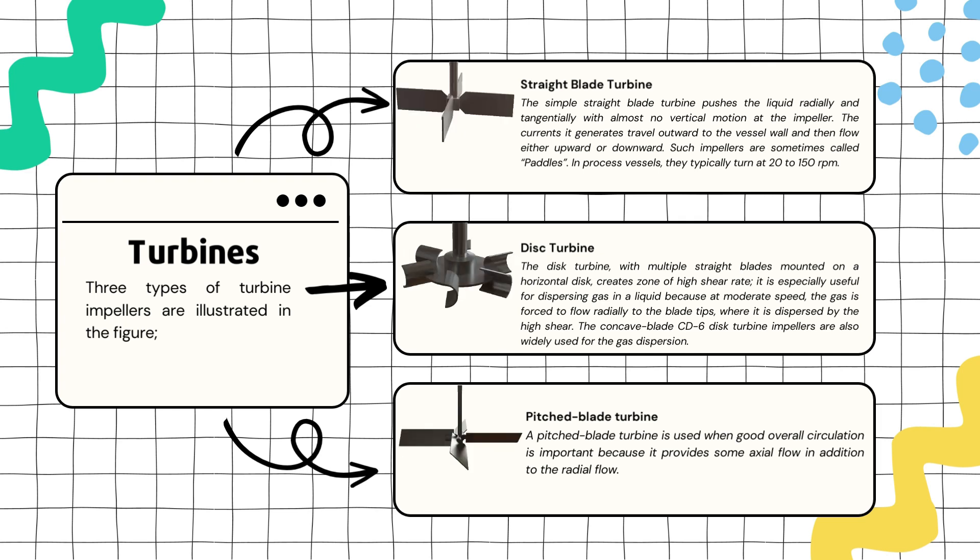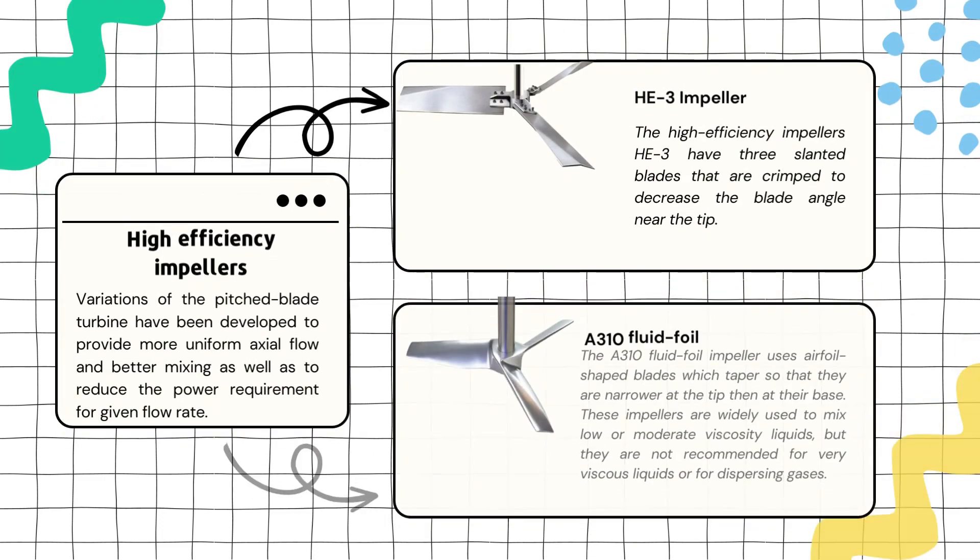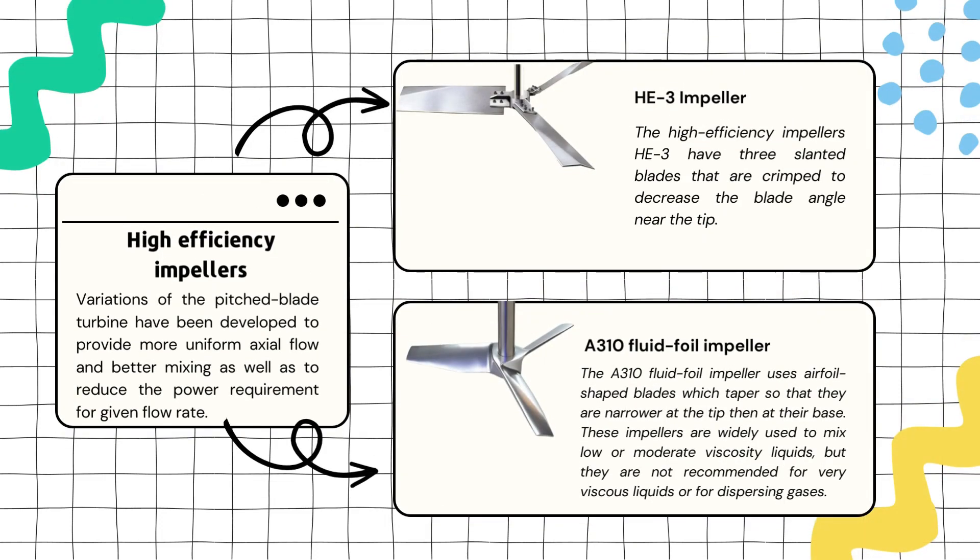For this video, we will look at the last type of agitator commonly used: high efficiency impellers. High efficiency impellers are used to improve mixing efficiency and reduce power requirements for a given flow rate. Variations of pitched blade turbines have been developed.